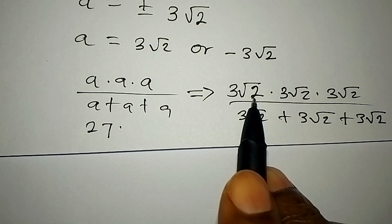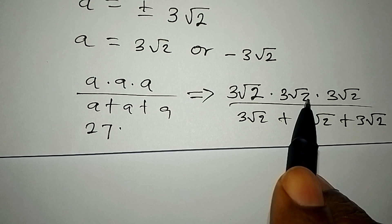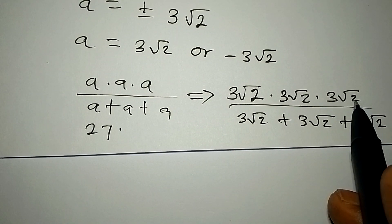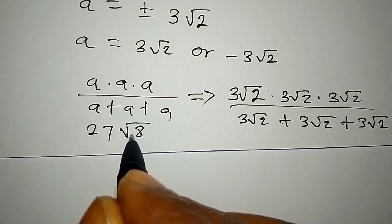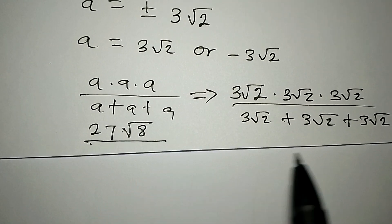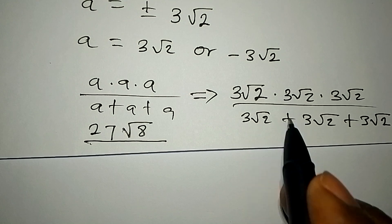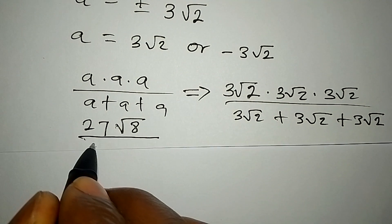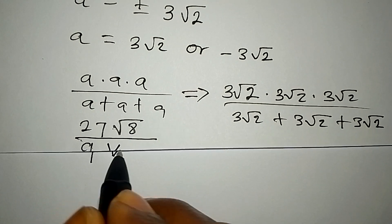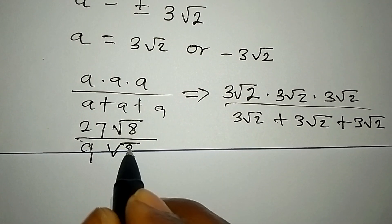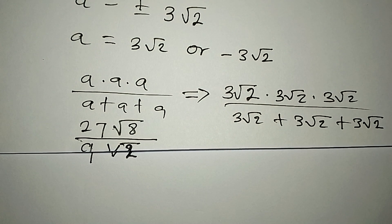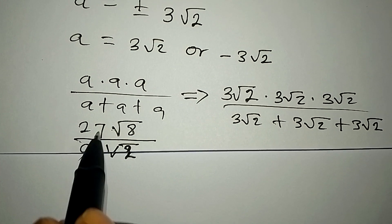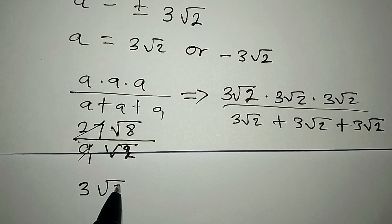Then multiplying the root parts: √2 × √2 × √2 gives √8. The denominator is 3 + 3 + 3 equals 9, and then we have root 2, so the denominator is 9√2. Now 9 divides into 27 three times, so we have 3√8 over √2.